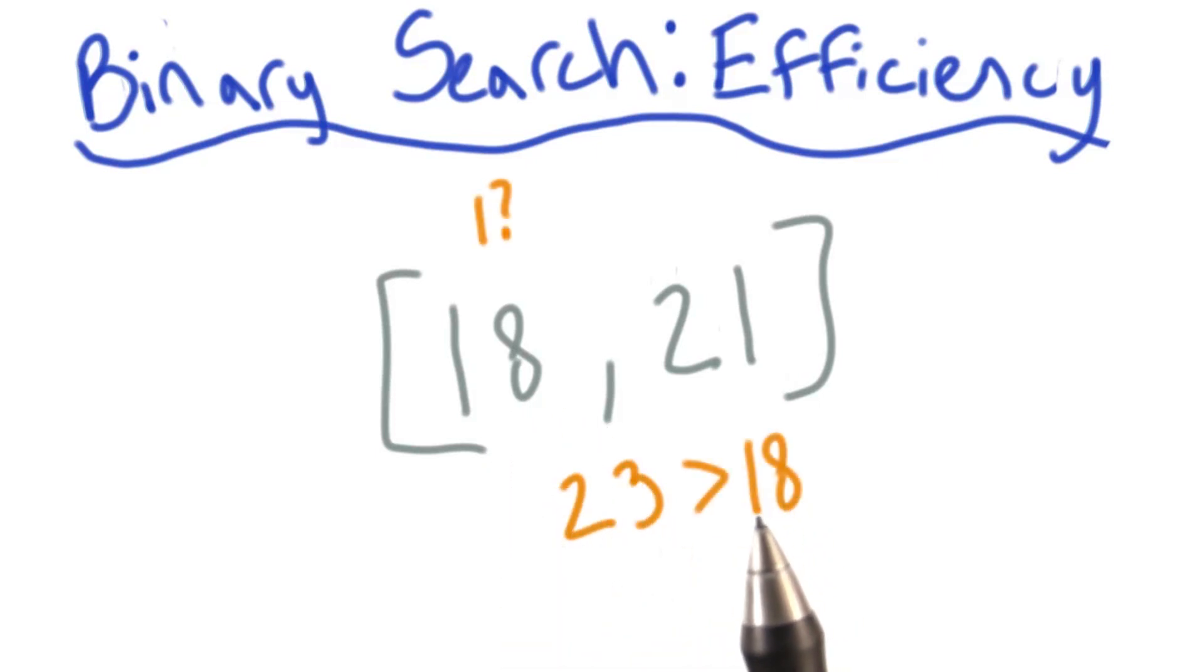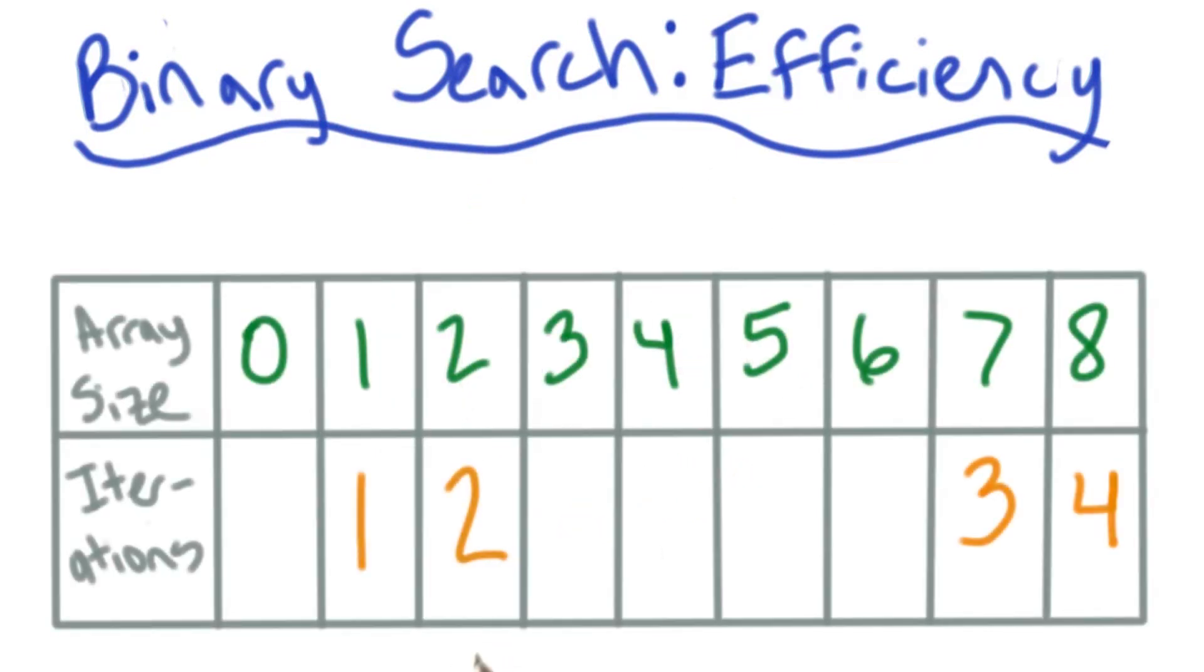Since 23 is greater than 18, I can check 21 now. In just two steps, I have my answer, that 23 doesn't exist in this array. Great, we can add 2 to the table now.